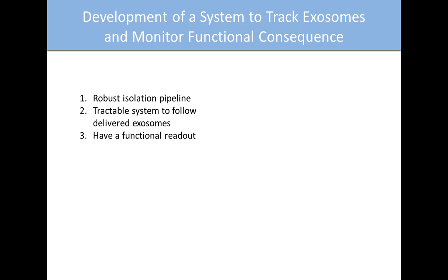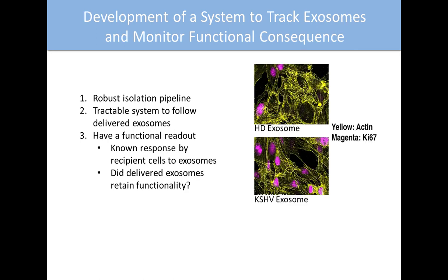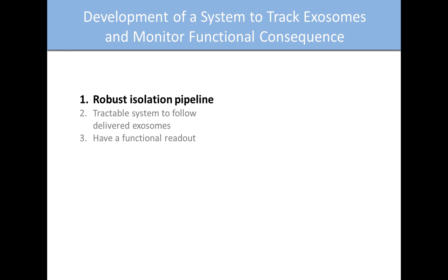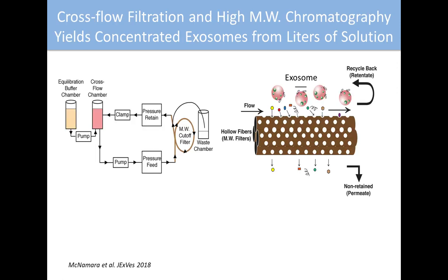The last step is to have a functional readout — very important for us as virologists — a known response by recipient cells to exosomes so we can ask: did the delivered exosomes retain functionality? What I'm showing here are cells treated with HD exosomes from a healthy donor, and exosomes taken from KSHV-infected cells — Kaposi's sarcoma herpesvirus — delivered to recipient cells to ask whether we have a unique phenotype.